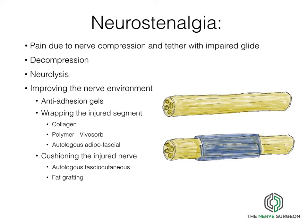The aim is to improve the nerve environment, which can be done with anti-adhesion gels, wrapping the injured segment with collagen or a membrane — in this case a Vivasorb polycaprolactone membrane — and then autologous flaps such as adipofascial flaps placed around the site of injury. There is a risk that new tether points can occur at the junction between the wrap and normal nerve. Other ways to cushion the nerve include autologous fasciocutaneous flaps or fat grafting.